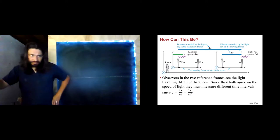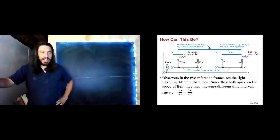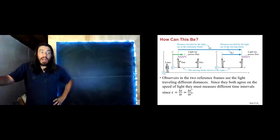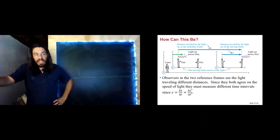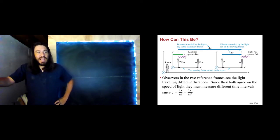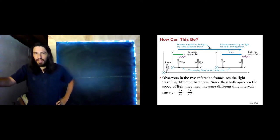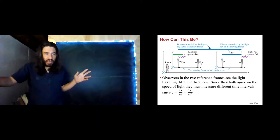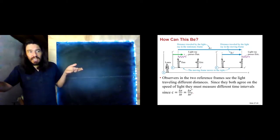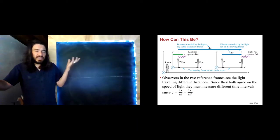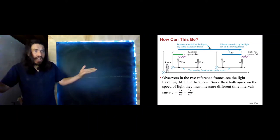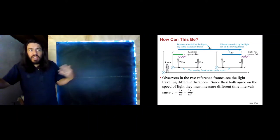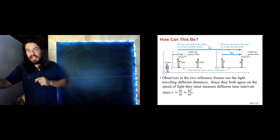Now we have Laura, Dan, and Eric. Laura is at rest in the S reference frame. Dan and Eric are moving together in the S′ reference frame. This light ray passes Dan on its way to Eric. All three of these people agree on that fact — they all agree that the light ray passes Dan and heads to Eric.